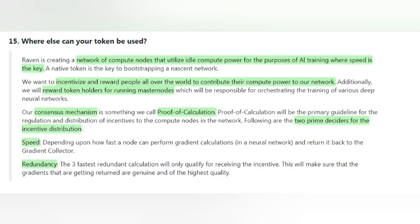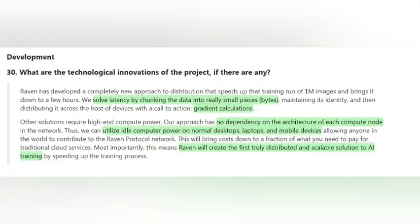To decide and distribute the rewards, Raven Protocol uses a consensus mechanism known as Proof of Calculations. The two primary deciders of this consensus mechanism are speed — depending upon how fast the device can perform gradient calculations — and redundancy, where the three fastest redundant calculations will qualify to receive the incentives.